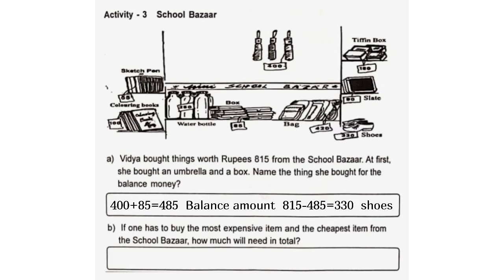B. If one has to buy the most expensive item and the cheapest item from the school bazaar, how much will be needed in total? 420 plus 55 is equal to 475.